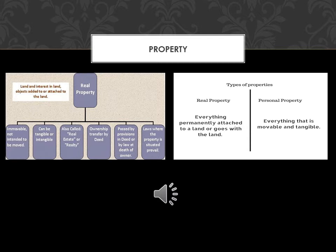This distinction between types of property comes from English common law, but our modern laws continue to distinguish between the two. Each type of property is treated differently under the law. There are many different types of laws that specifically pertain to personal property, and many other types of law that pertain specifically to real property.